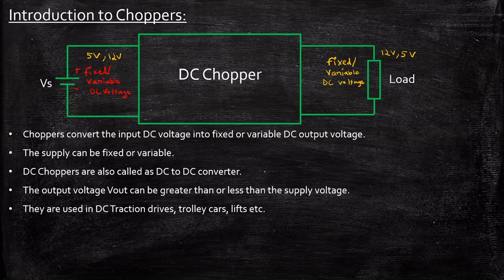They're also used in DC traction drives, trolley cars and lifts, etc. So they're used in wide variety of applications. This is just a simple example. Nowadays, they're largely used in electric vehicles where DC to DC converter is always required for any sort of power conversion within the system.